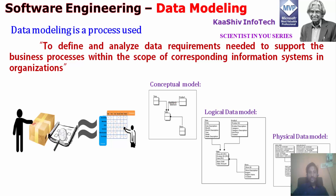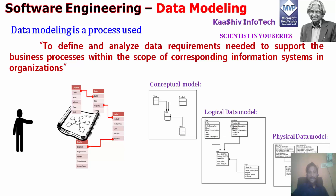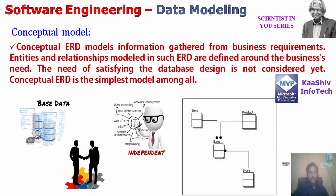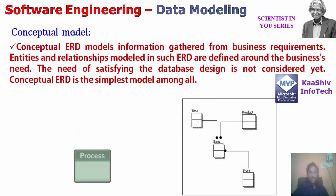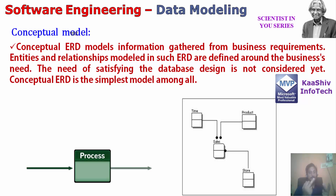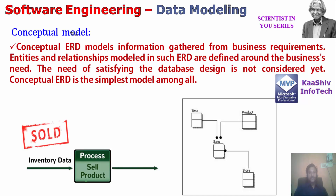Under data modeling, there are three different areas we are going to discuss. The first one is conceptual model, the second one is logical data model, and the third one is physical data model. If we talk about conceptual data model — for a college management system, what are the things we want? We need student, professors, department, mark details and everything. On a high level, what are the major things we want to cover? That concept is referred to as conceptual model.